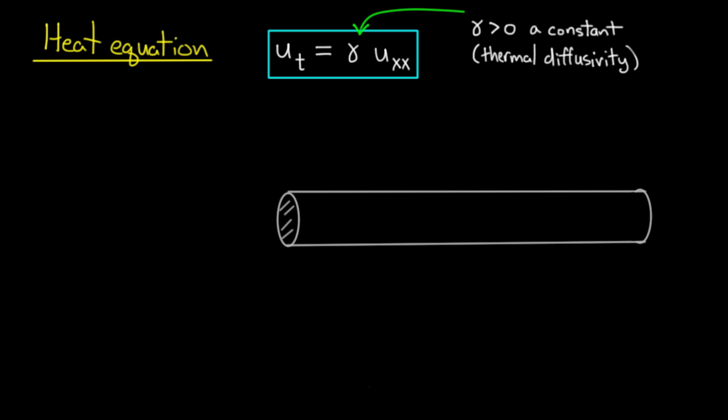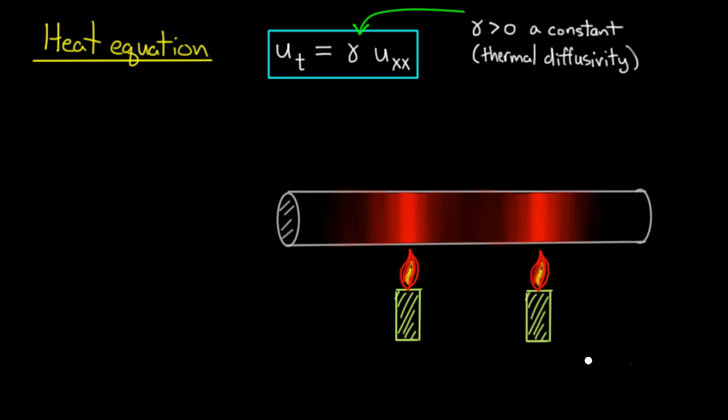Let's start with an experiment. Say we have a metal rod and we heat it up, putting some candles underneath it and waiting a little while. You get some hot spots above the candles, and as you move away from the flame it cools down a little bit. Now let's take away those candles and make a few assumptions.